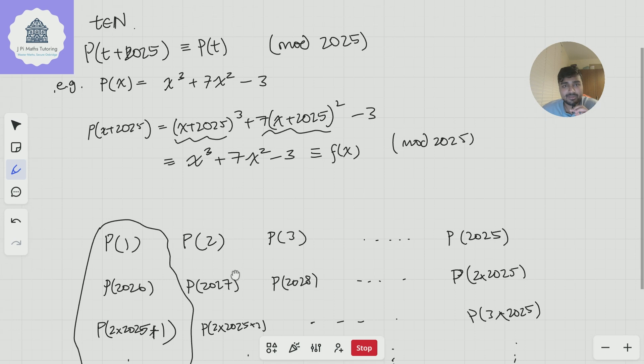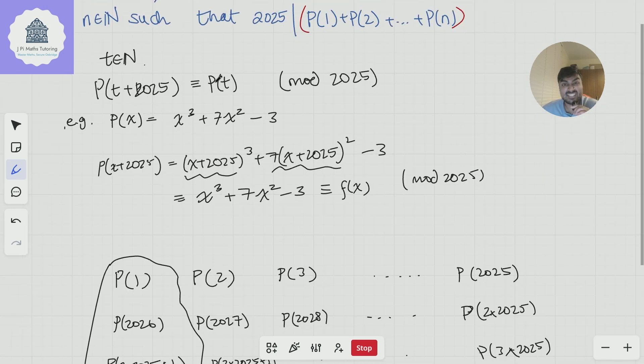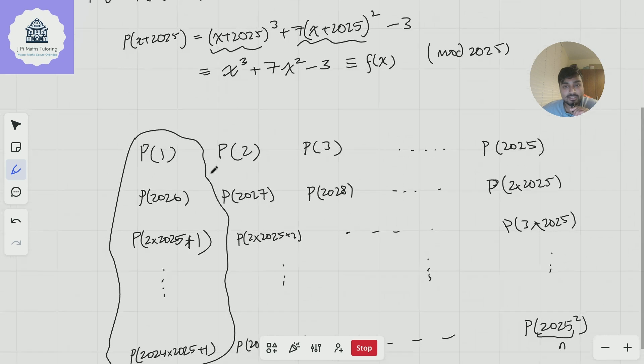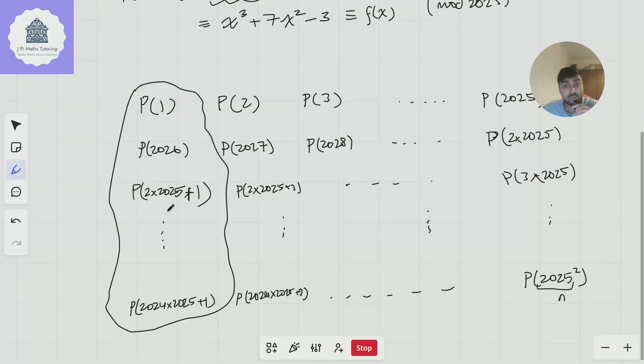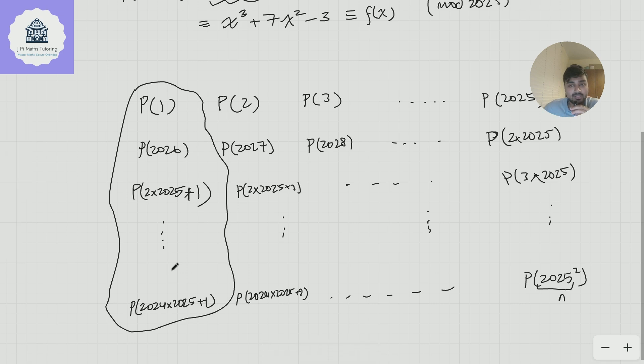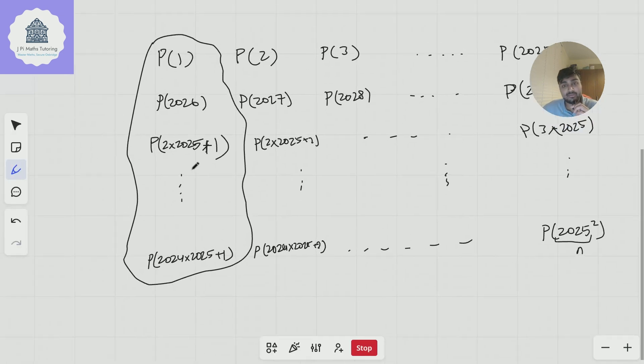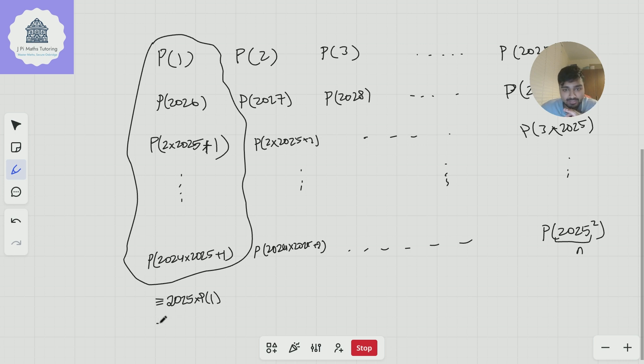to notice that in this first column, all of these guys are the same thing mod 2025. So I don't really know what this column equals, but I do know for a fact that this is congruent to 2025 times p of 1, but since everything here is all integers, this thing here is just going to be 0 mod 2025.